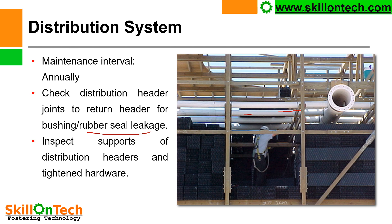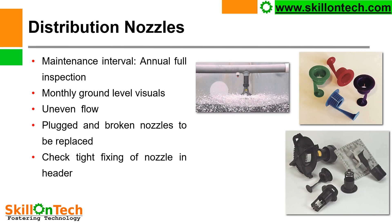The supports of distribution headers shall also be inspected annually or whenever an opportune shutdown comes, to verify the intactness of the headers and supports. Here you can see the distribution nozzles. Various types of distribution nozzles are available, and hole sizes come in 8mm, 10mm, 12mm, and various other sizes, as per the requirement to maintain pressure in the header.